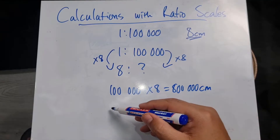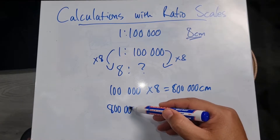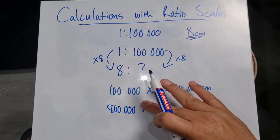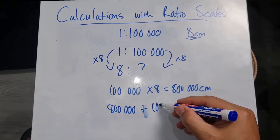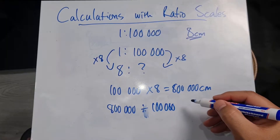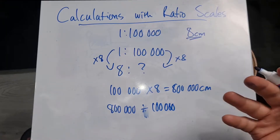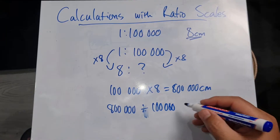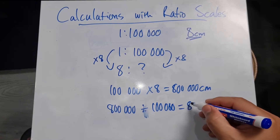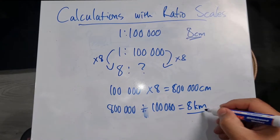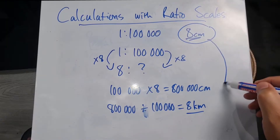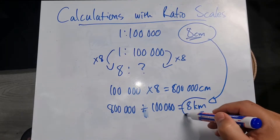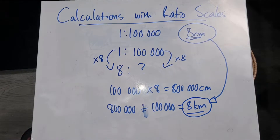That 800,000 centimeters — I'm going to divide by 100,000 because I want to get the actual distance in kilometers, and that will give me eight kilometers. So eight centimeters on the map will be the equivalent of eight kilometers actual distance.